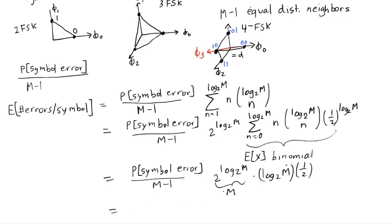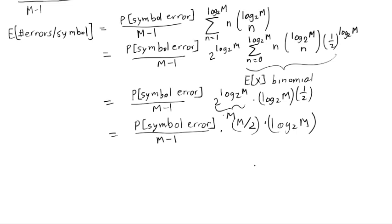And so what we get here is the probability of symbol error divided by M minus 1 times M over 2 times log base 2 of M. Finally, this is the number of errors per symbol. So we usually want the number of errors per bit, which we call the probability of bit error. And this is going to be the expected number of errors per symbol divided by the number of bits per symbol.